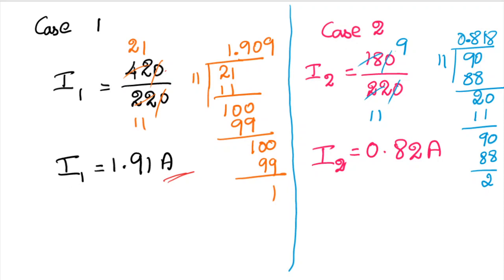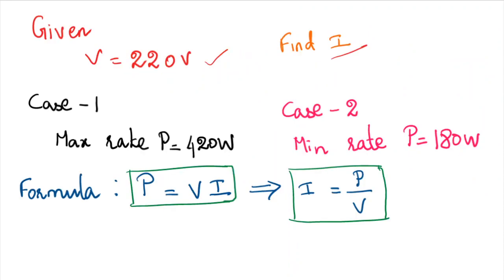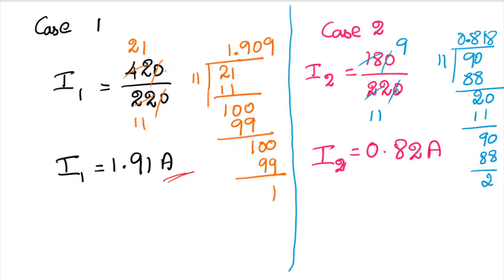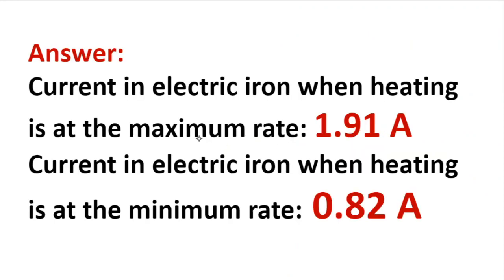Now substituting Case 2: current = power divided by voltage. At minimum rate, power is 180 watts and voltage is 220 volts. So 180 divided by 220 gives 0.82 amperes. The answer: current in the electric iron when heating is at maximum rate is 1.91 amperes, and when heating is at minimum rate is 0.82 amperes.